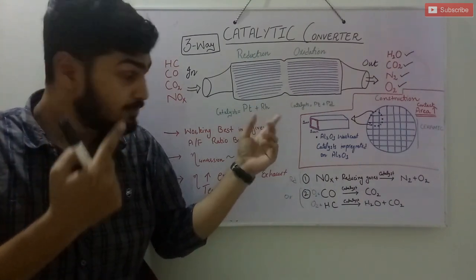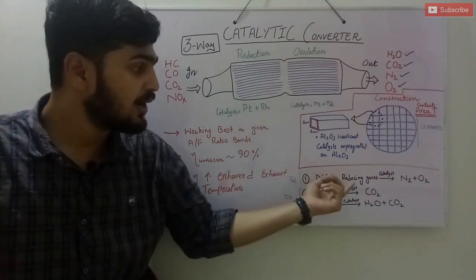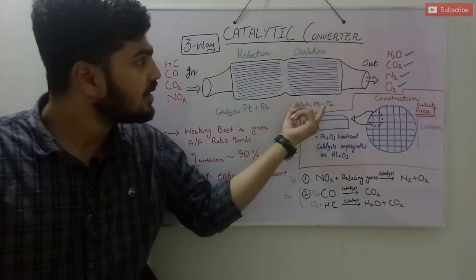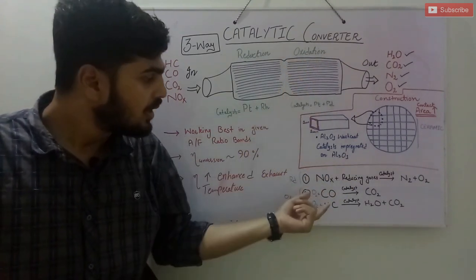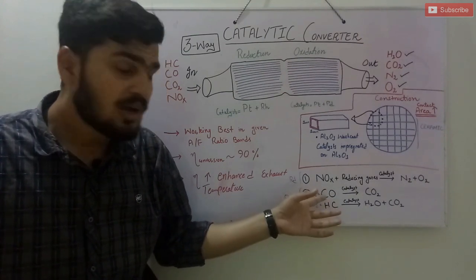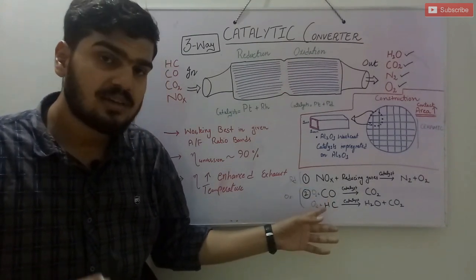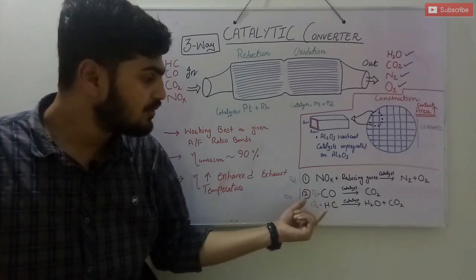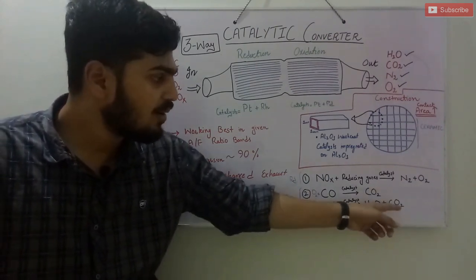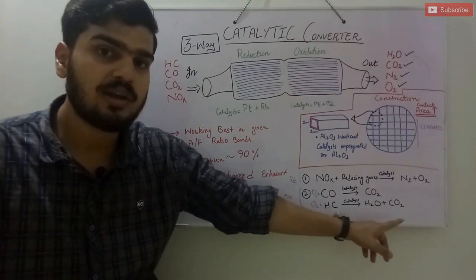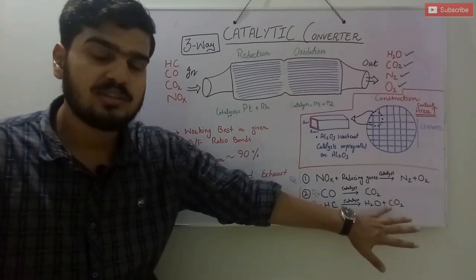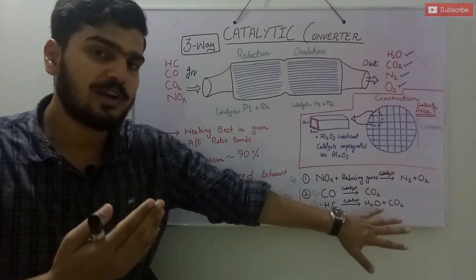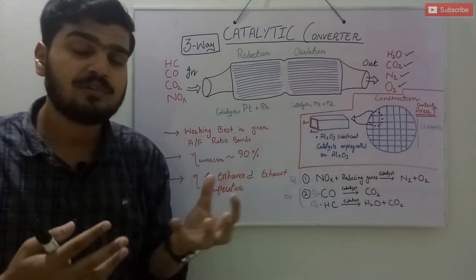In the second step, the oxidation step, the CO (carbon monoxide) and HC (unburnt fuel) will oxidize into less harmful water vapors and carbon dioxide. Carbon dioxide is a greenhouse gas but it is less harmful for human intake. The catalytic converter's purpose is to convert harmful gases into non-harmful gases.